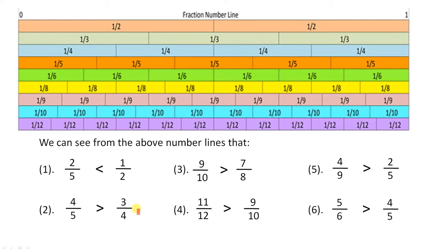Number 2: 4 over 5 is greater than 3 quarters. Here's 4 over 5, and 4 over 5 is greater than 3 quarters. Number 3: 9 over 10 is greater than 7 over 8. Here is 9 over 10, and there is 7 over 8 — so 9 over 10 is greater than 7 over 8. Number 4: 11 over 12 is greater than 9 over 10. Here is 11 over 12, and there is 9 tenths — so 11 over 12 is greater than 9 tenths.